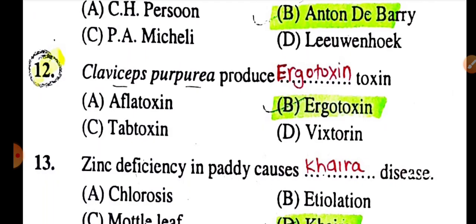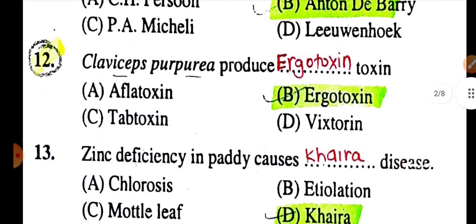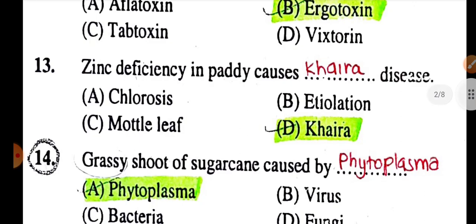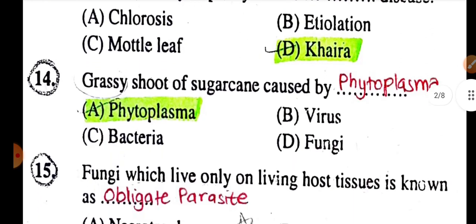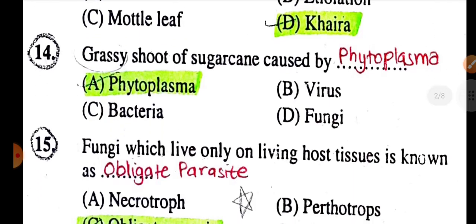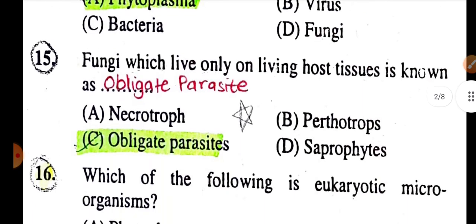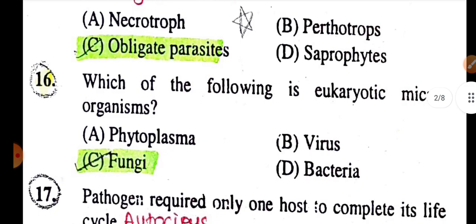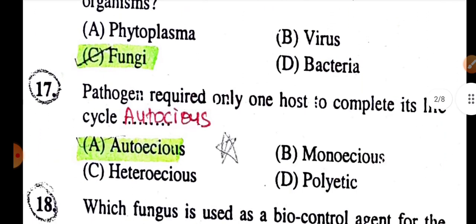The crystalline nature of virus was given by Stanley. Who is the father of modern plant pathology? Answer: Anton de Bary. Claviceps purpurea produces ergotoxin. Zinc deficiency in paddy is caused by Khaira disease. Grassy shoot of sugarcane is caused by phytoplasma. Fungi that live only in living host tissue are known as obligate parasites. Which of the following is a eukaryotic microorganism? Answer: Fungi.